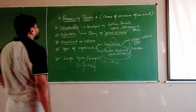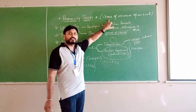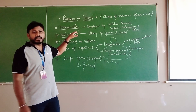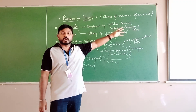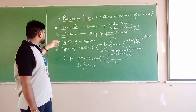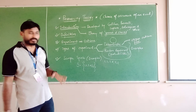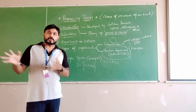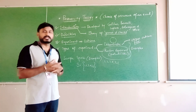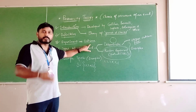To summarize today's introduction to probability theory: probability is a numerical measure of the chance of occurrence of an event, representing uncertainty. It was first developed by Galileo, Bernoulli, Laplace, Kolmogorov, and others, originating from the theory of games and chances. An experiment is any process yielding well-defined results, and the result of an experiment is called an outcome.